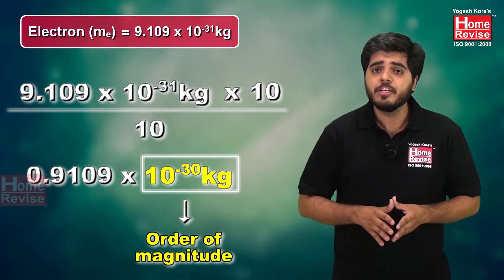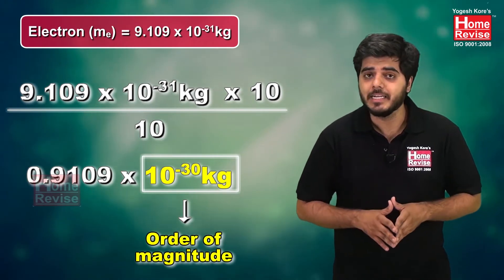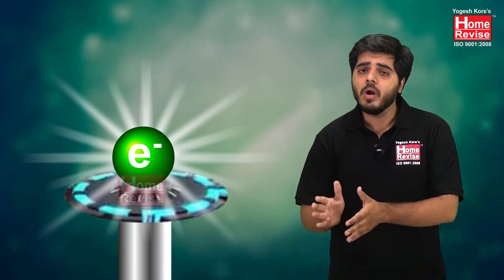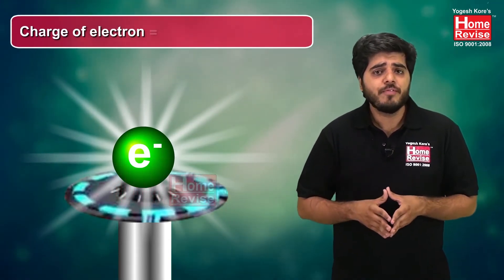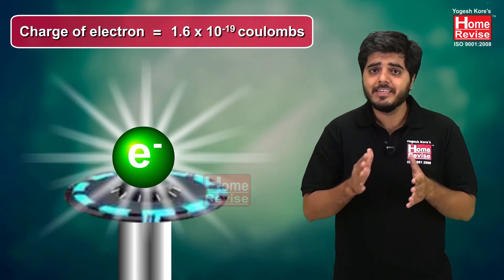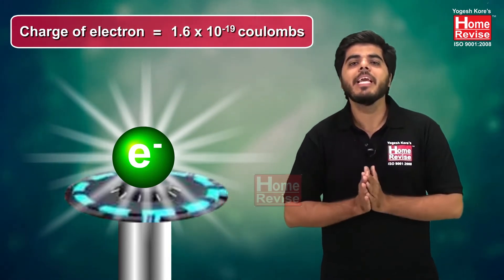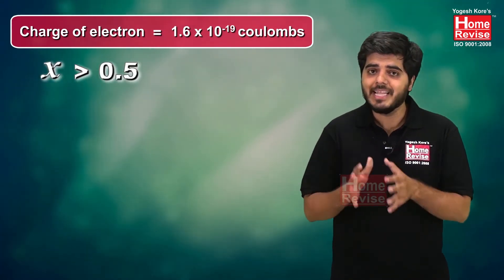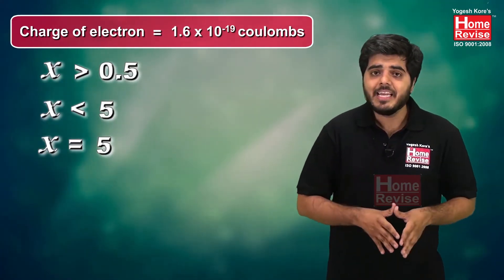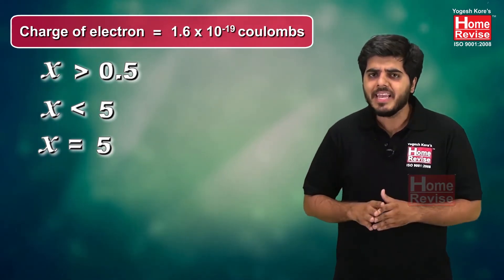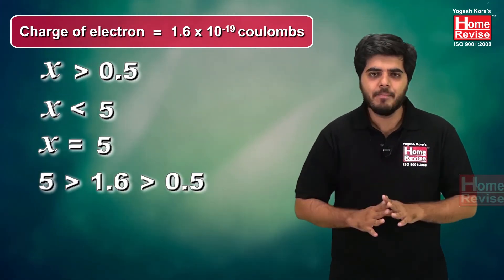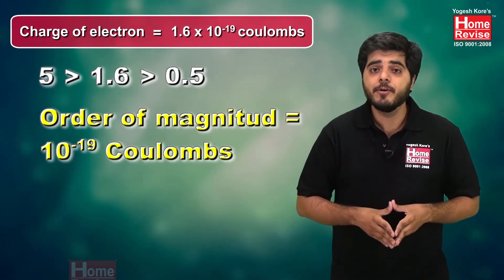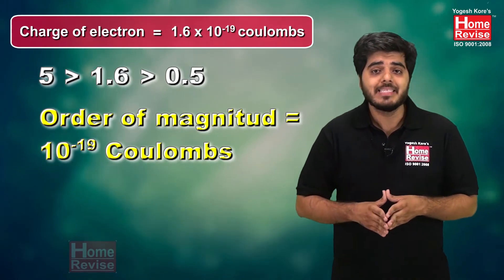So the order of magnitude of the mass of an electron is 10⁻³⁰ kg. Let's take another example. What is the charge of an electron? Charge of an electron is 1.6 × 10⁻¹⁹ Coulomb. Check the range: x = 1.6, which is greater than 0.5 and less than 5 — it is already in range. So the order of magnitude is directly 10⁻¹⁹ Coulomb.